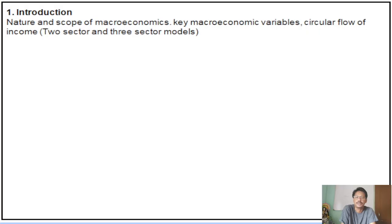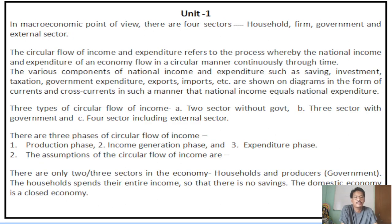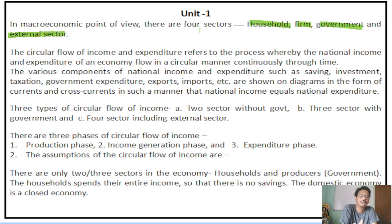From the macroeconomic point of view, an economy may be divided into four sectors. One is called the household sector, another is the firm sector, then government, and the external sector. When we deal with the economy from a macroeconomic point of view, these are the four sectors which exist and are interrelated with and interdependent on one another.